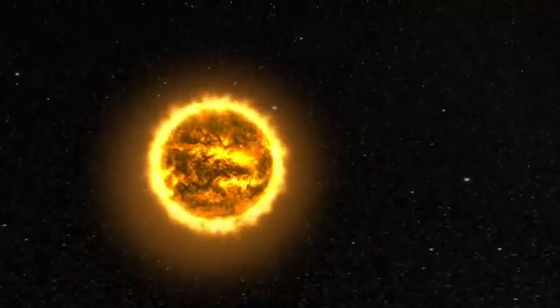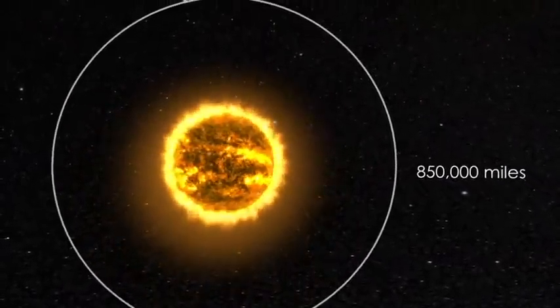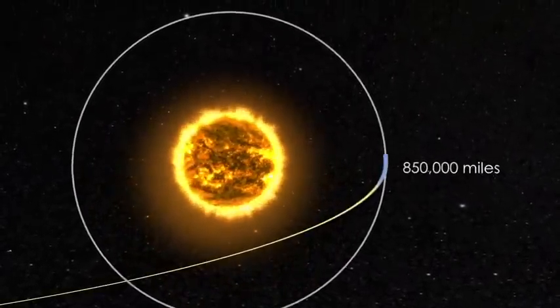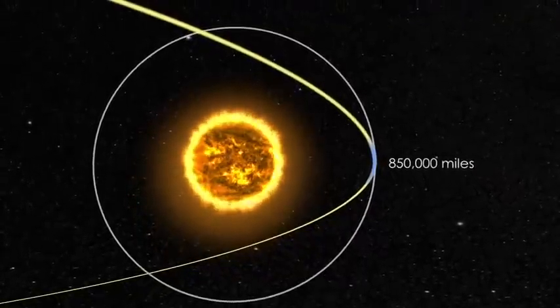To be considered a sungrazer, a comet needs to get within about 850,000 miles from the Sun at perihelion. Many come even closer, even to within a few thousand miles.